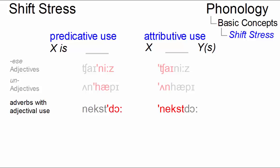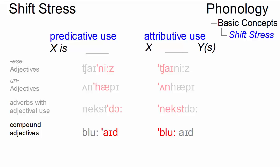Adverbs with adjectival use: she is next door versus our next-door neighbor. Compound adjectives such as she is blue-eyed versus a blue-eyed girl. Numbers larger than 12: she is 14 versus 14 books.